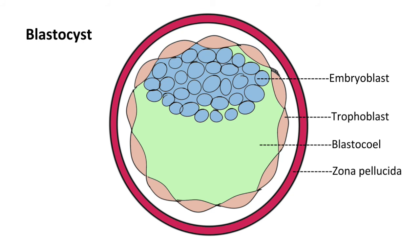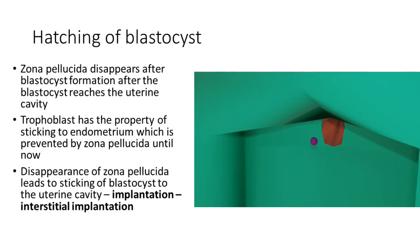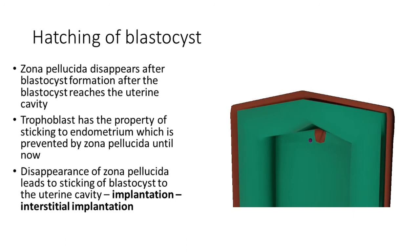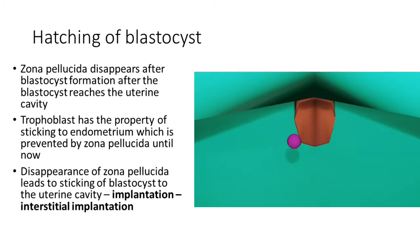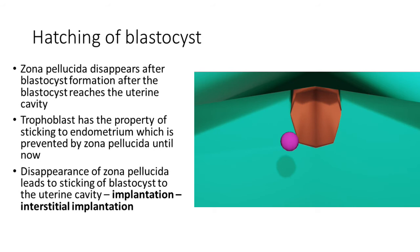We will continue the story of blastocyst, but before that I will have to digress to a side story: that is hatching of blastocyst. Now after the formation of blastocyst and when the structure is already in the uterine cavity, the zona pellucida which stays up to this point now disappears.